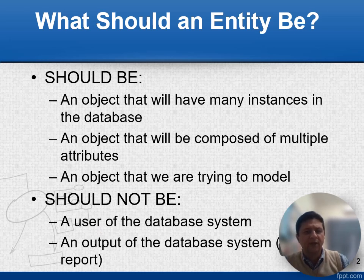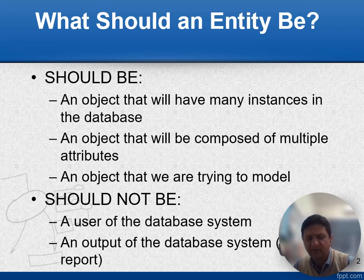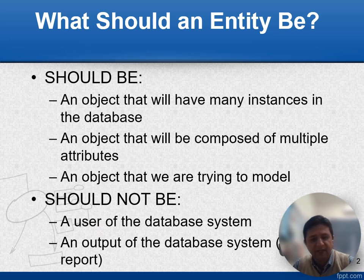Now let's discuss what should and what should not be an entity type. According to Hofer, any object that consists of many instances in the database should be modeled as an entity; an object composed of multiple attributes should be modeled as an entity; and an object that we are trying to model should be an entity. However, Hofer says a user of the database and an output of the database system should not be modeled as entities.